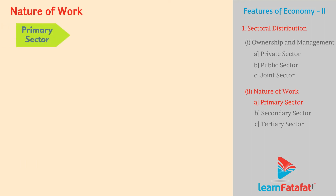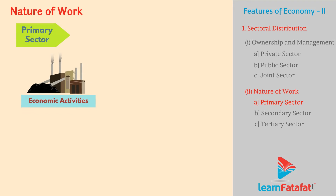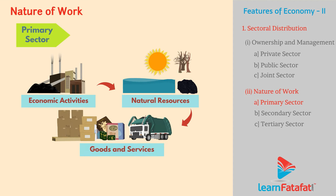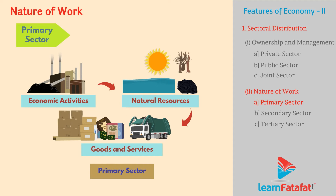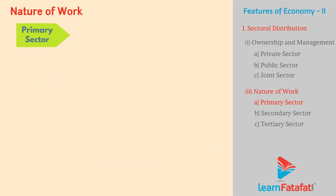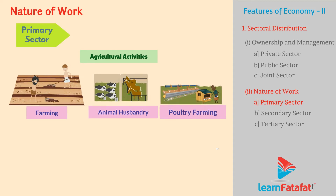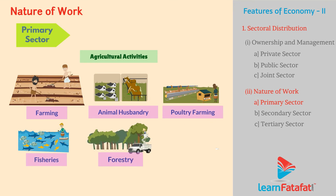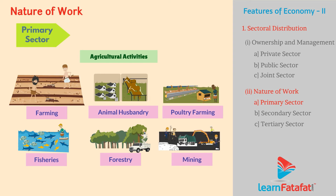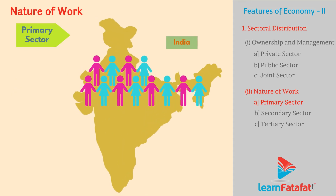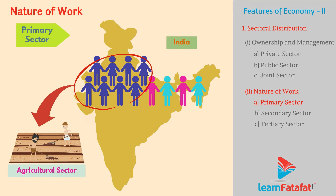Primary Sector: Economic activities that depend on natural resources for production of goods and services are grouped in the primary sector. It mainly includes agricultural activities such as farming, animal husbandry, poultry farming, fisheries, forestry, and mining. Therefore, this sector is also called the agricultural sector. In India, more than half of the population is employed in this sector.